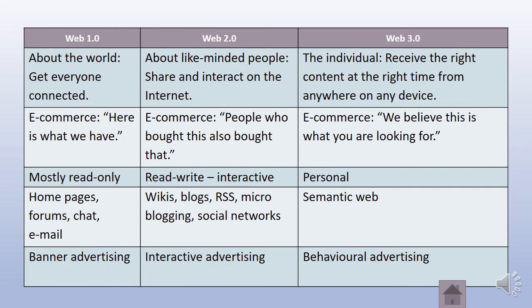This table shows a summary of the differences between the three webs. Web 1.0 is about connecting the world — getting everyone connected. Web 2.0 was about like-minded people sharing and interacting on the internet. Web 3.0 is about the individual — he receives the right content at the right time from anywhere on any device. In terms of e-commerce: Web 1.0 told you what they have; Web 2.0 said people who bought this product also bought that; and Web 3.0 e-commerce won't just show you a big website full of items — it will offer you what it thinks you need, saying 'we believe this is what you're looking for.'